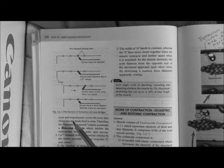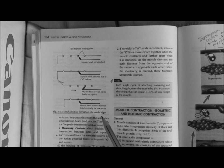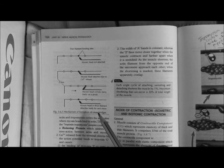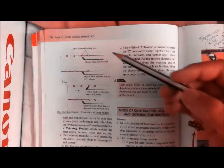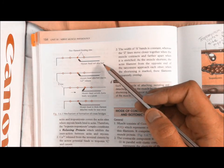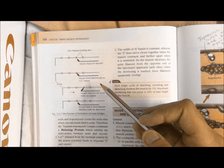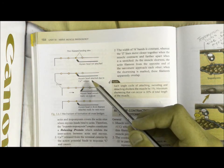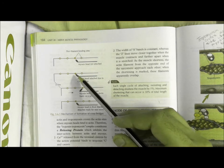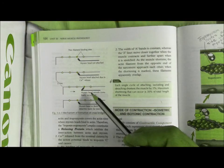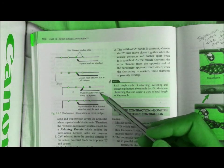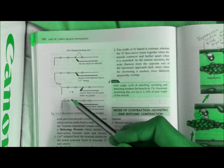This diagram shows the mechanism of cross bridge formation, or basically a single cycle which consists of attaching, swiveling, and detaching. Here, the myosin head is not attached, but once calcium binds to troponin C and ATP is hydrolyzed, the myosin head is attached to the actin. Then, myosin releases the energy as well as the ADP and the inorganic phosphate, and it swivels.